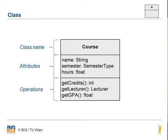A class can provide different operations to display methods for doing something. In this class we define three different operations: GetCredits, GetLectary, and GetGPA. On the right-hand side of each operation name you can see the type of the answer.